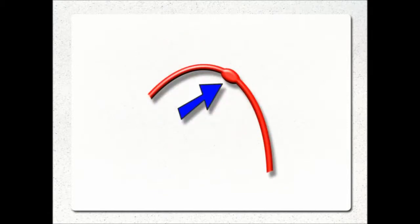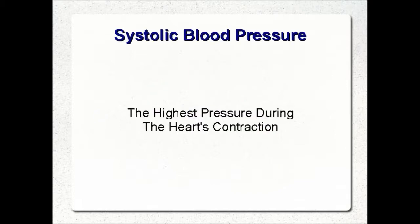When blood is pushed out of the heart during a heartbeat, there is pressure exerted on the arteries which forces the arteries to expand. This expansion of the arteries can be felt — it is your pulse. When you check your pulse, you are in fact feeling your arteries expand in response to an increase in blood pressure caused by the heart contracting. This pulse of high blood pressure is known as systolic blood pressure.